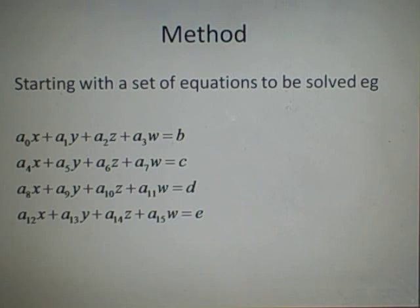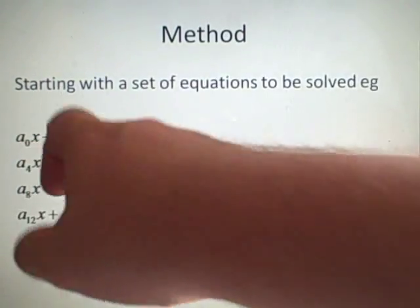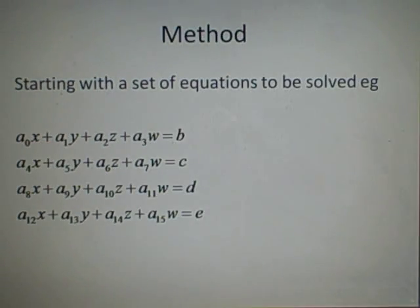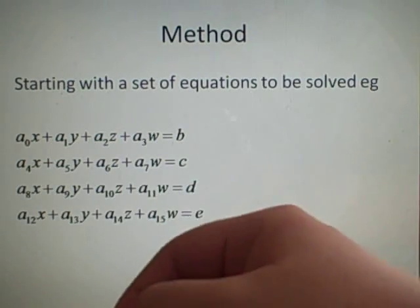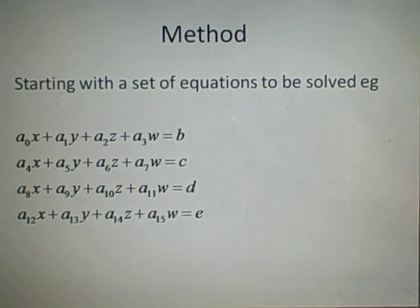If you're given a set of equations to solve, such as here, we've got four variables x, y, z, w, with four constants in front of them, all different, equaling another constant which I'm calling b here. We've got the same for c, d, and e, but they're all using the same variables x, y, z, w.